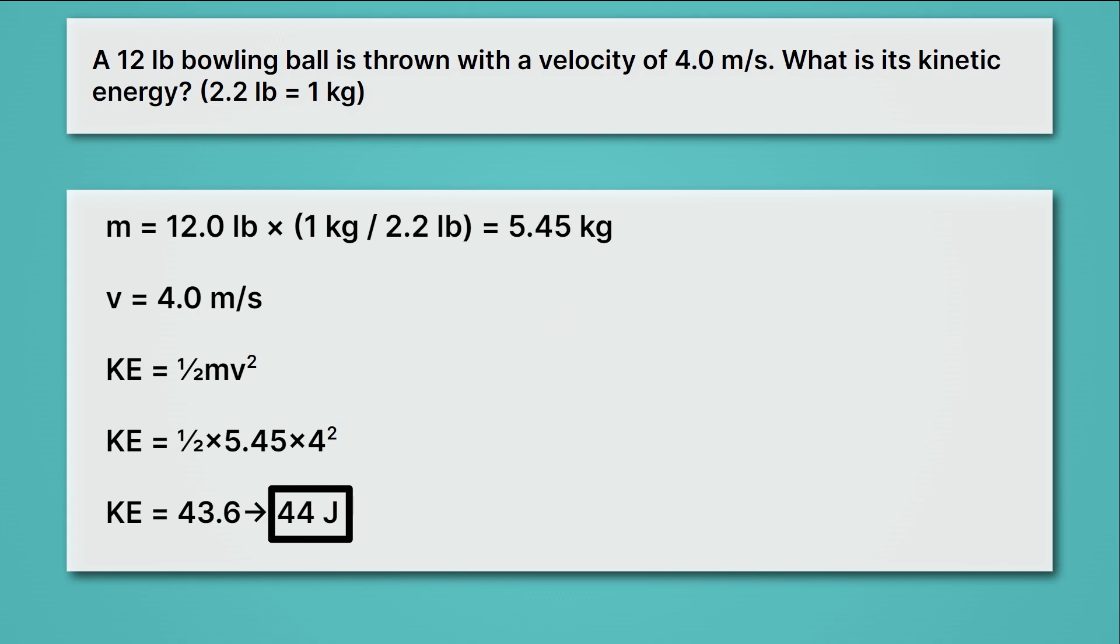Again, we start by identifying the variables we have, mass and velocity, and mass needs to be converted to kilograms by dividing by 2.2 pounds. Then we substitute in these variables into our kinetic energy equation, and rounding to 2 sig figs, because each of our variables has 2 sig figs, we should get 44 joules.